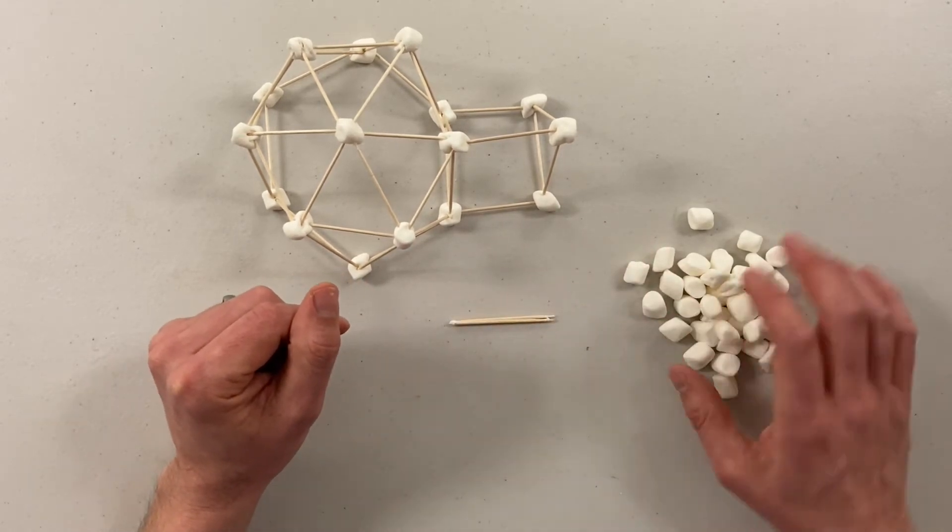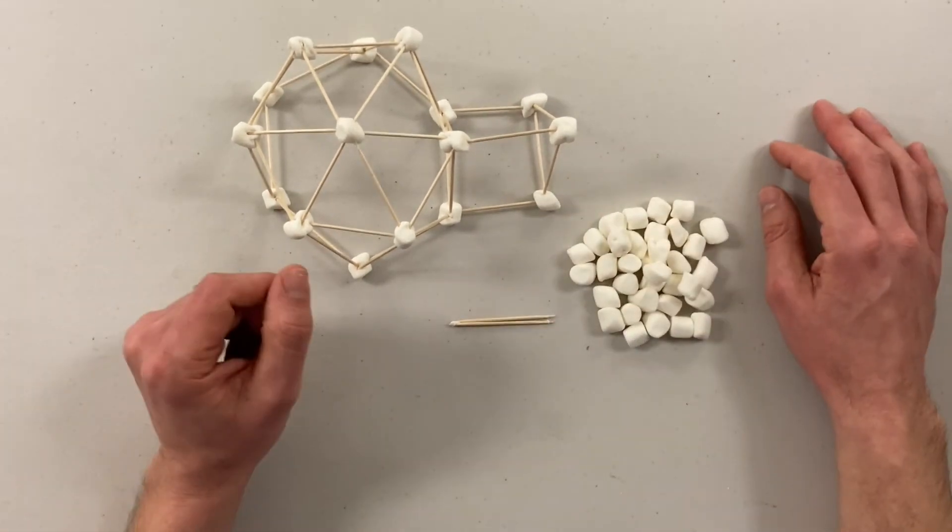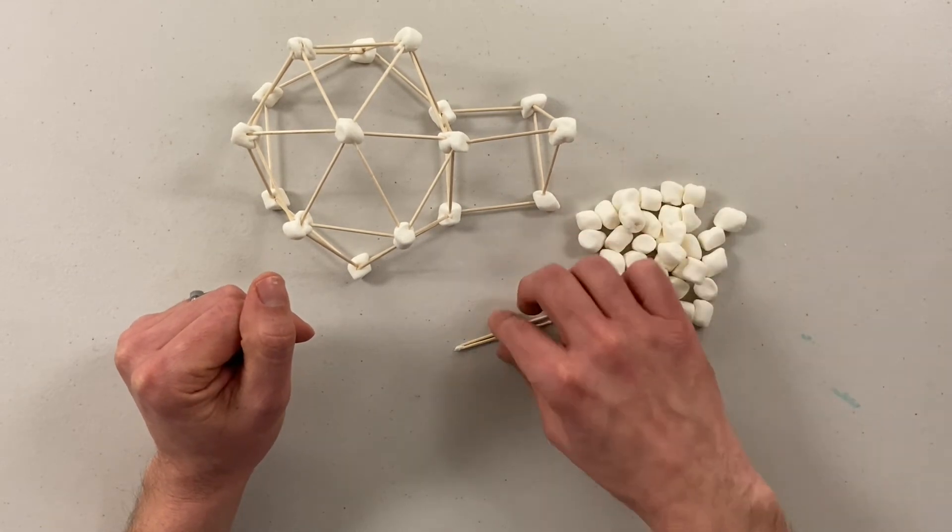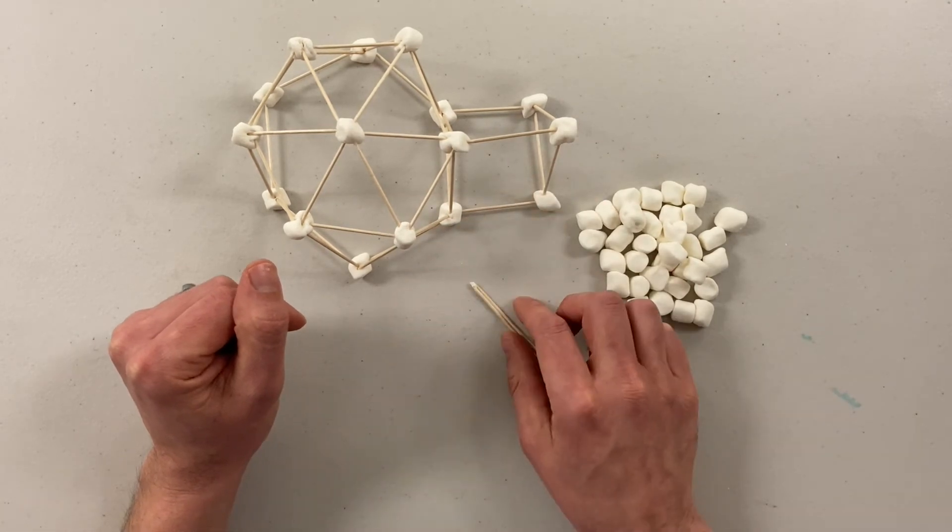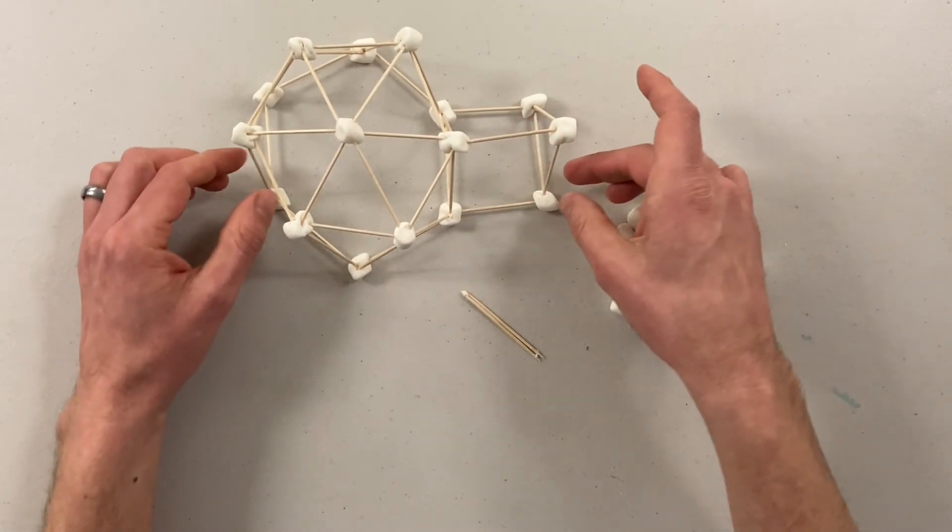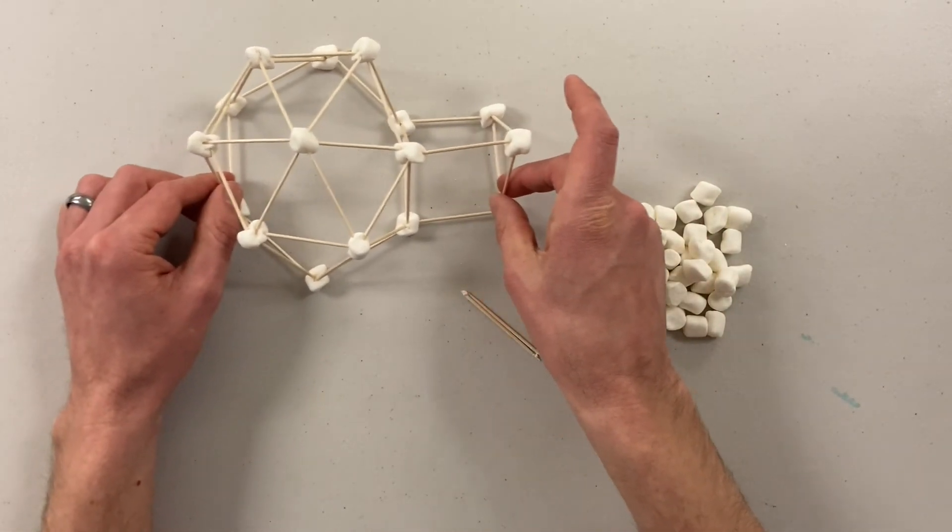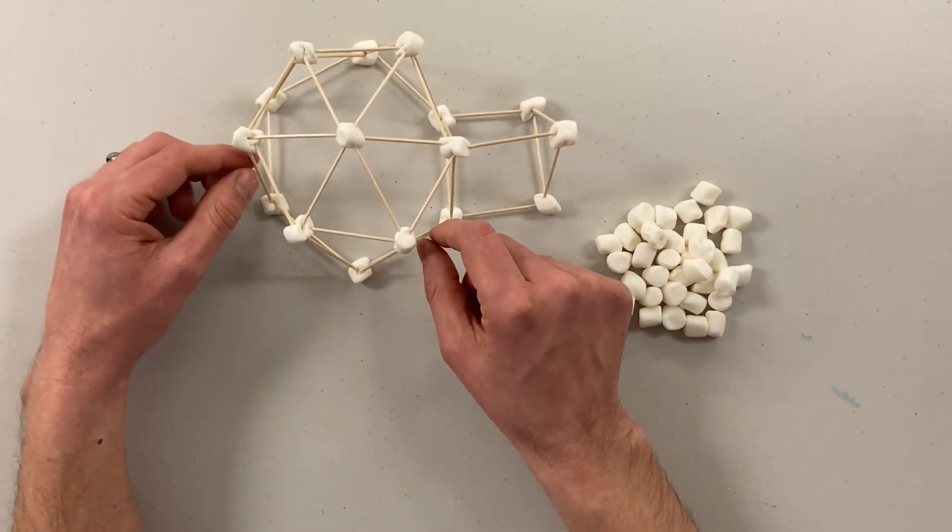And here you can see I have quite a few marshmallows left, which isn't a bad thing ever. Certainly I can find a use for those if I don't figure out a way to incorporate them into my igloo. But you can see here I did choose to do a small door, a door here that then leads into the domed, the larger domed structure.